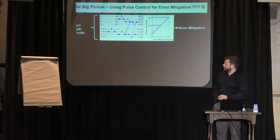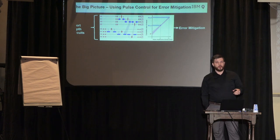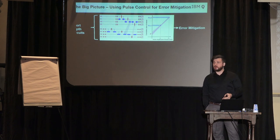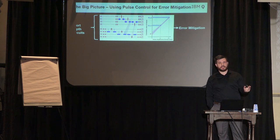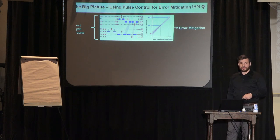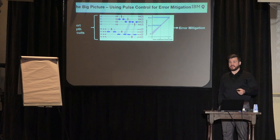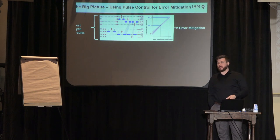One big thing where pulse control or pulse level access to the hardware will be useful is that you can start to deploy this error mitigation technique called Richardson extrapolation, where you're going to take the pulses and just increase their duration, and from that you can end up getting better results. It's important though that these circuits are short depth, because if you start dealing with circuits that have a very large depth, you're going to be running into the decoherent errors of your qubits, which this technique doesn't help you correct for.